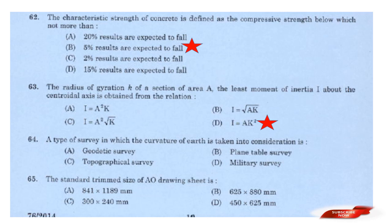Question: A type of survey in which the curvature of earth is taken into consideration is? Options: Geodetic survey; Plane table survey; Topographical survey; Military survey. Answer: Option A — Geodetic survey. The standard trimmer size of A0 drawing sheet is 841×1189 mm. Answer: Option A — 841×1189 mm.